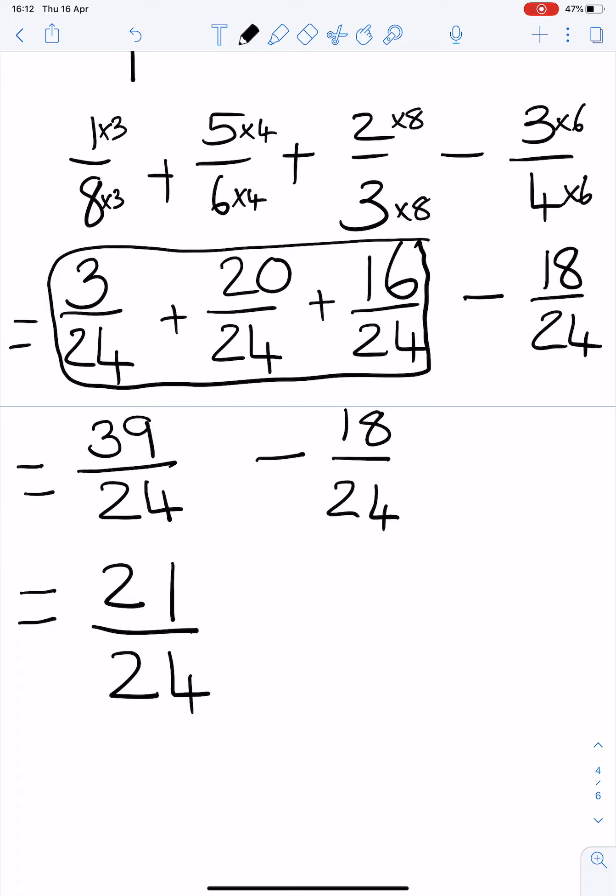Can I simplify that? Yes, I can divide top and bottom by 3. 21 divided by 3 is 7. 24 divided by 3 is 8. And that is the answer to that rather long and complicated sum.